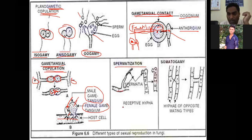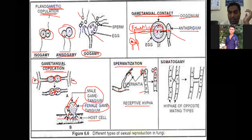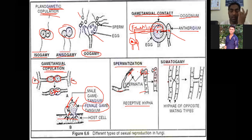Spermatization: in some advanced fungi, a sexual process is accomplished through minute spore-like structures called spermatia and specialized hyphae acting as male and female structures. Small non-motile sperm-like structures are produced by a hypha and land on a receptive hypha, transferring the male nuclei.